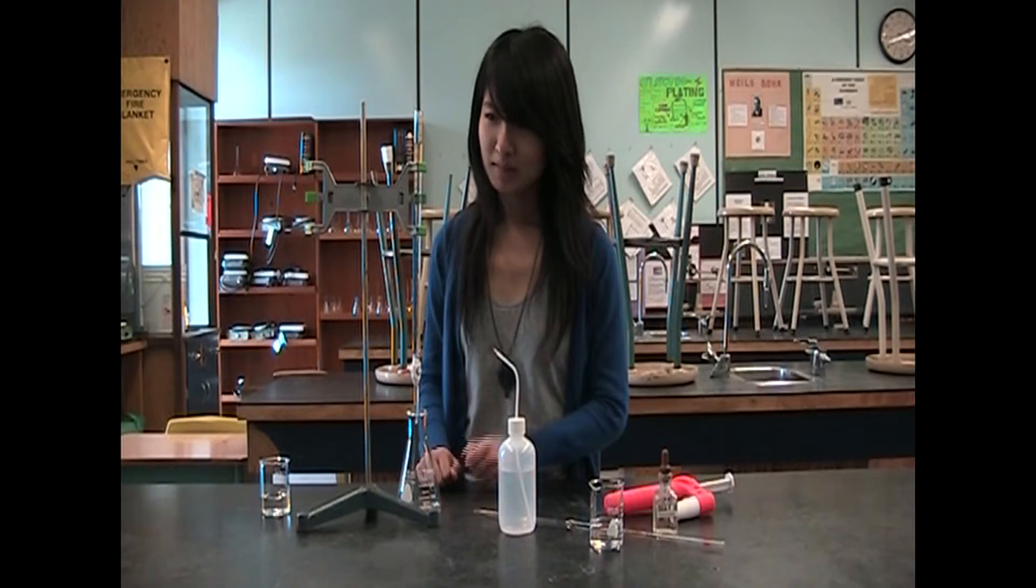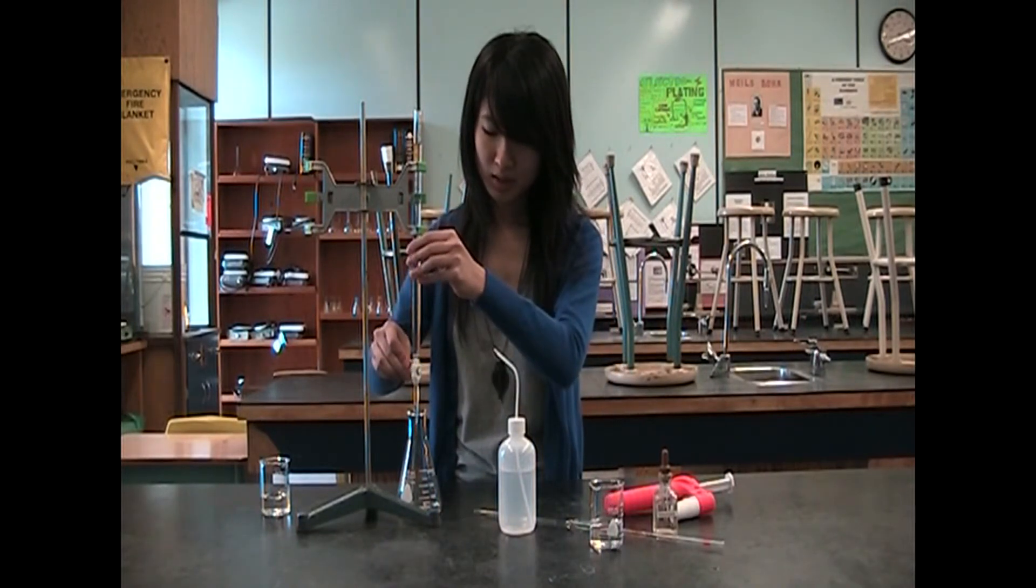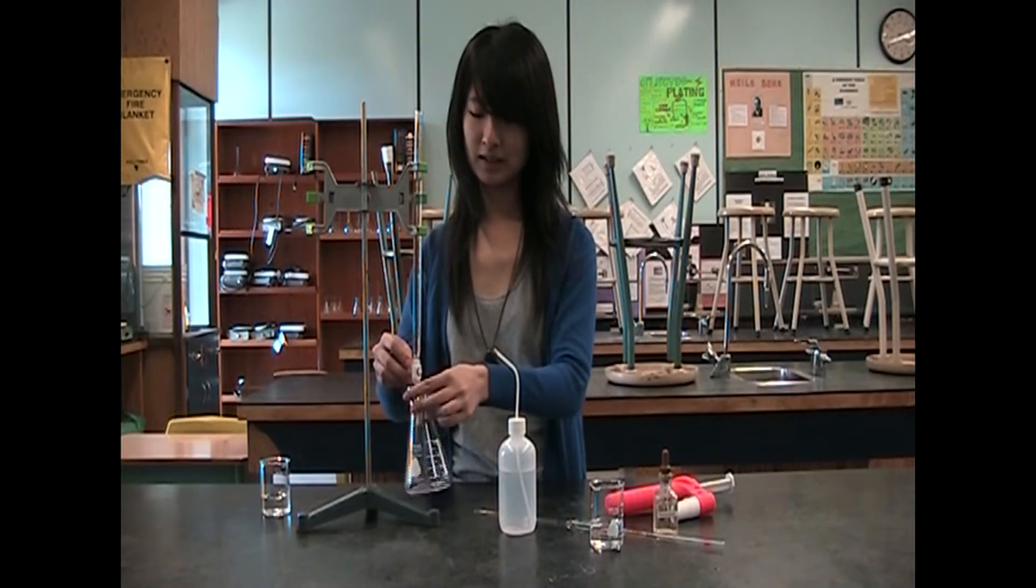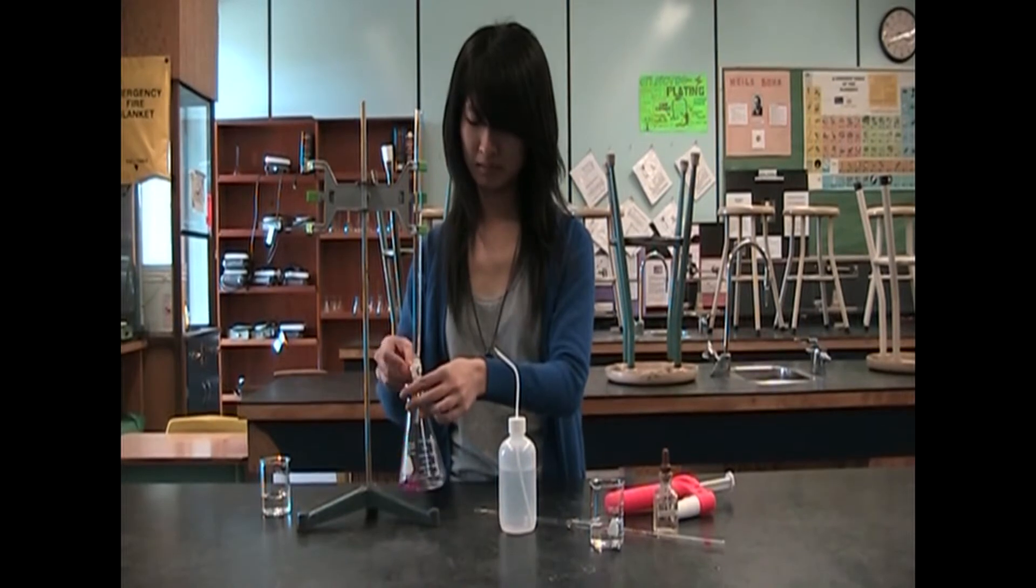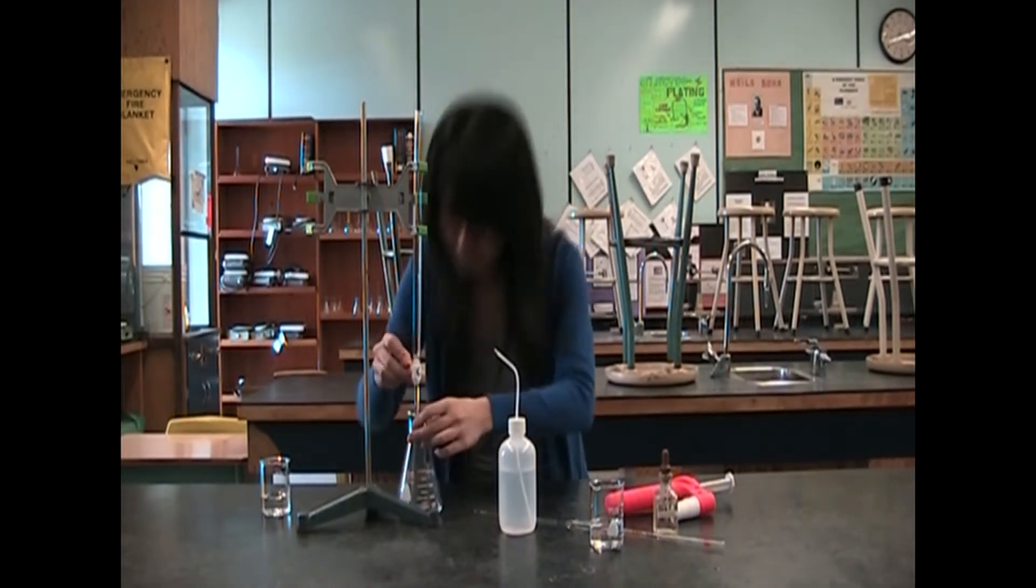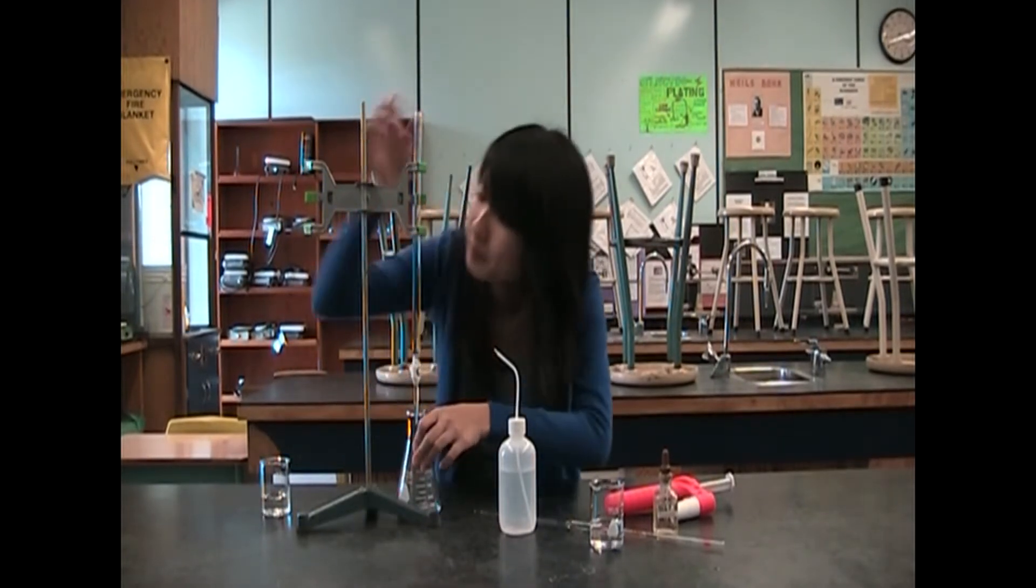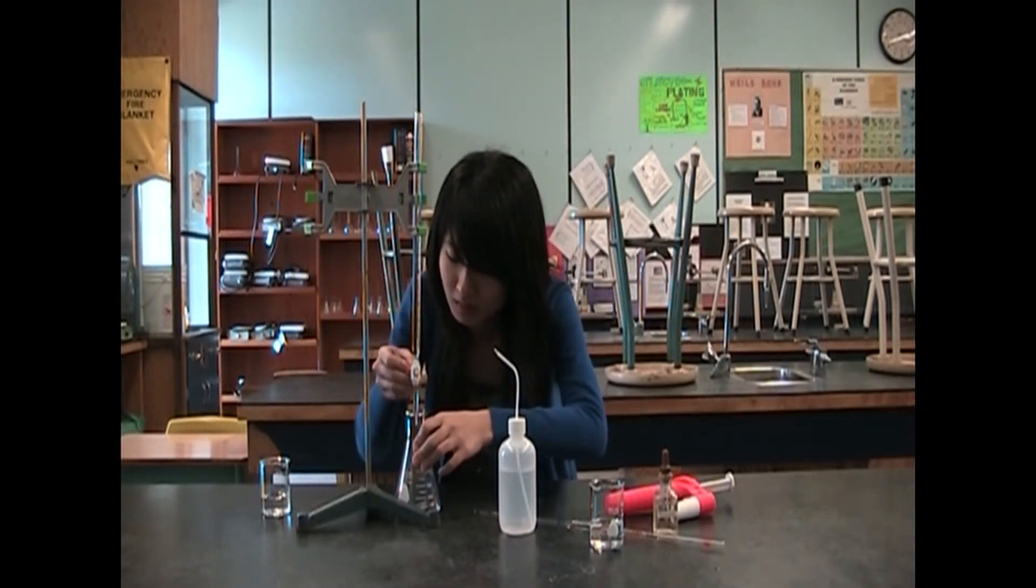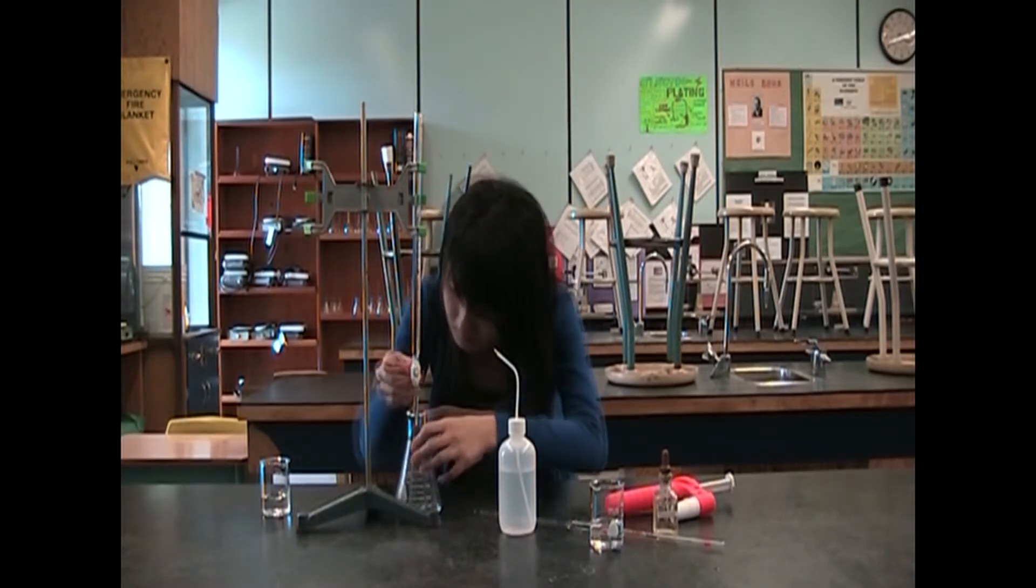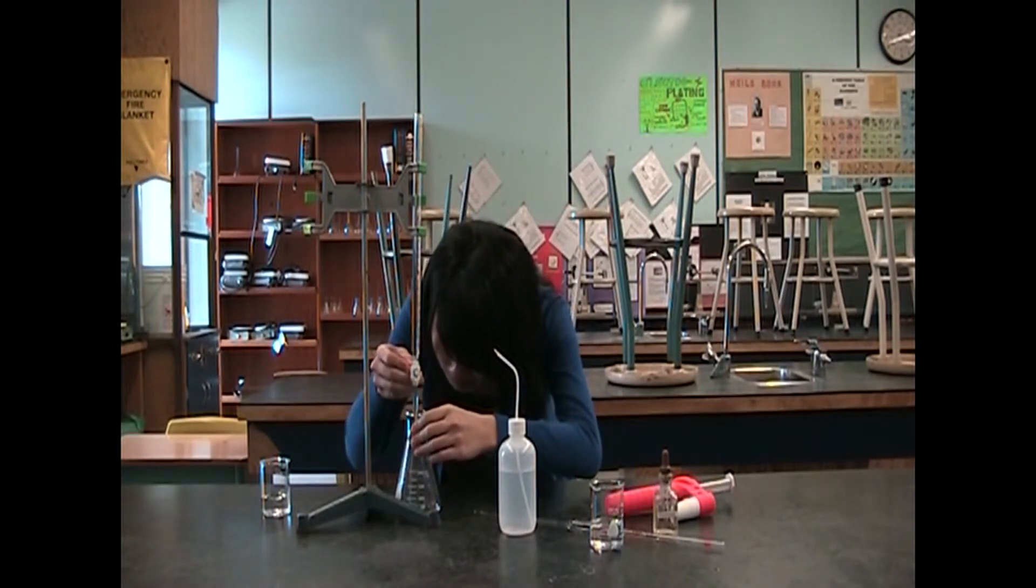Then drop by drop, you're going to add in the sodium hydroxide until it turns pink. Remember, gently swirl the flask. Then, drop by drop, when it turns light pink, we reach the end point.